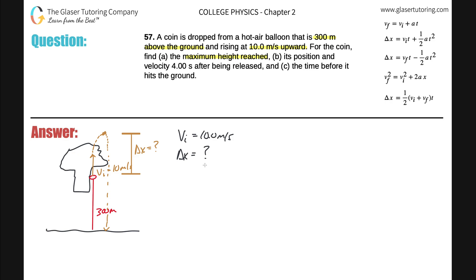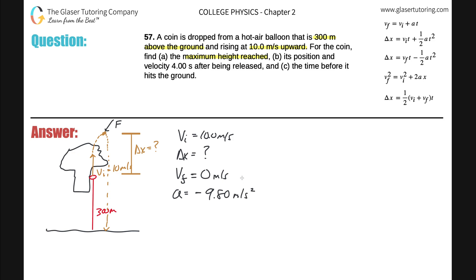The problem doesn't tell you this, but you have to know that at the highest point, the final velocity is zero meters per second - for a split second it stops. The problem won't tell you that; you have to know it. Also, once the coin is released from the balloon, the only force acting on it is gravity. Once it's in free fall, the acceleration is negative 9.80 meters per second squared - you have to memorize that.